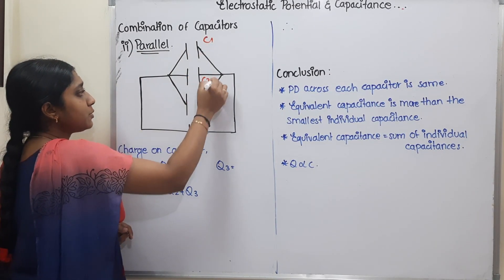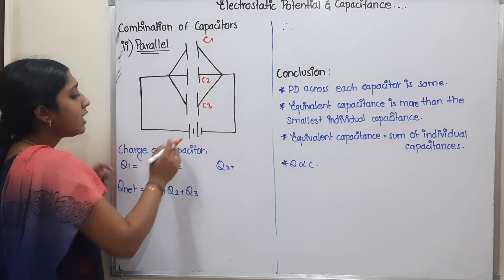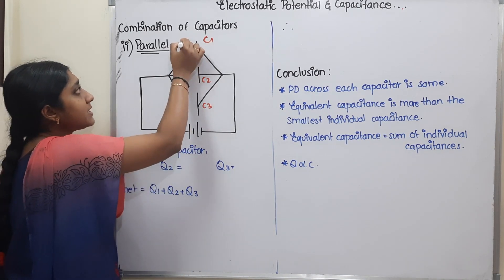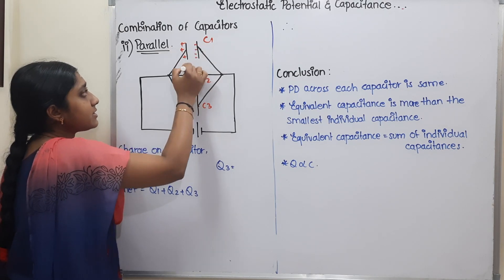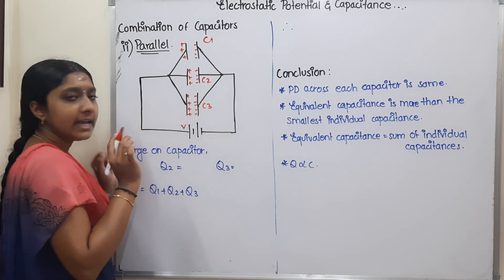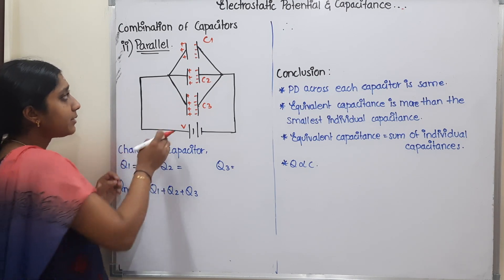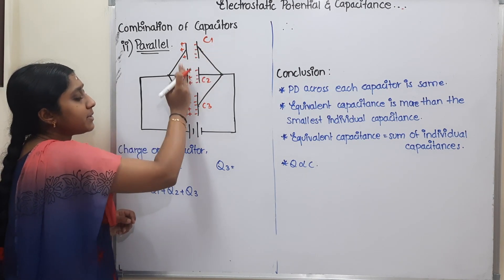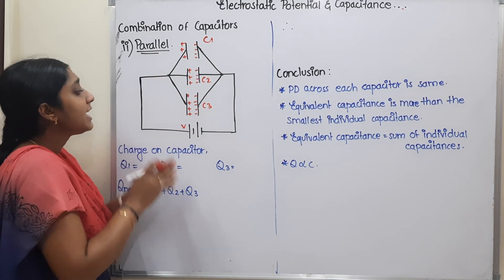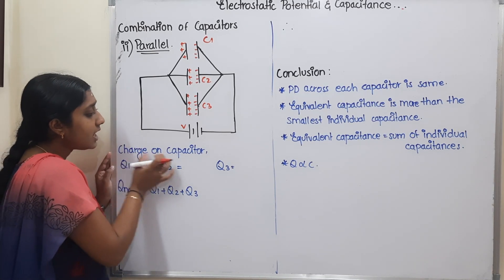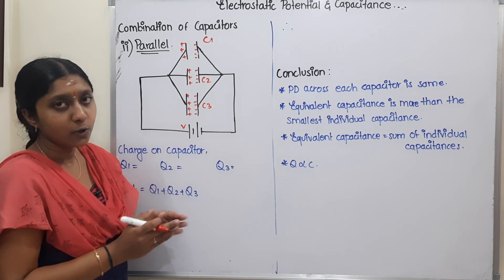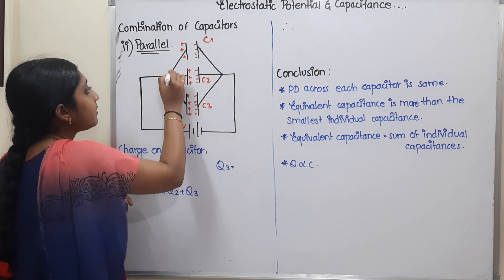In parallel, C1, C2, C3 — three capacitors are connected in parallel with a battery. The potential difference across each capacitor is the same. The positive plate is plus and the negative plate is minus for each capacitor. The current charges each capacitor, and charges Q1, Q2, Q3 accumulate in C1, C2, C3 respectively — the charges are different in parallel.